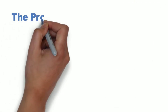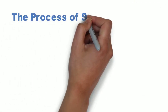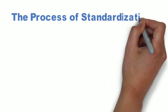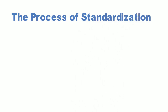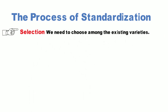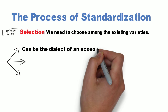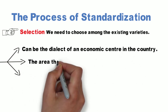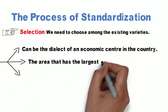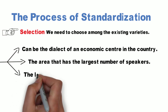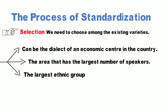Now we're gonna move on to the process of standardization. The first step is selection, which means we need to choose among the existing varieties — it can be the dialects of an economic center in the country, or the area that has the largest number of speakers or the largest ethnic group.